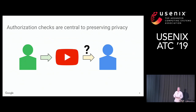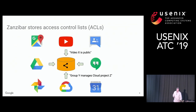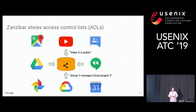There are many examples of the need for these authorization checks in any service that allows users to share objects — it could be videos, photos, documents, locations, calendar entries, et cetera. Zanzibar is a system that does these authorization checks for hundreds of Google services.